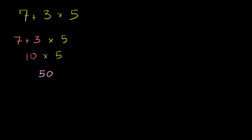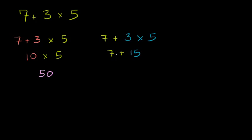Another way you could interpret it: you like to do multiplication before addition. So you'd do 7 plus, and then do the 3 times 5 first — 7 plus 3 times 5, where 3 times 5 is 15. And 7 plus 15 is 22.